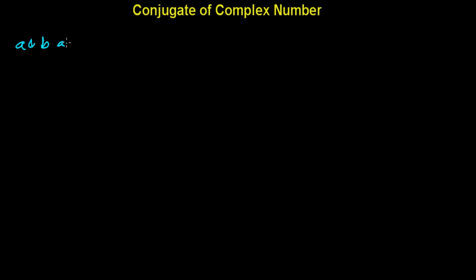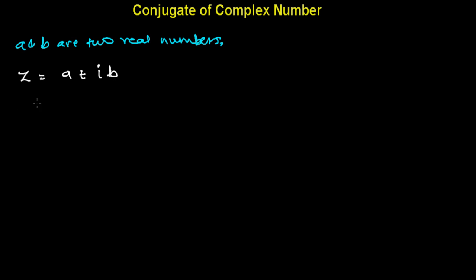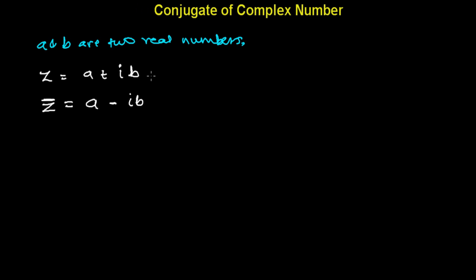Let's say a and b are two real numbers and z is a complex number, let's say a plus ib. Then z-bar, read as 'z bar', is called the conjugate of the complex number if the real part is the same and the imaginary part is also the same but just differs in sign — that time z-bar is called the conjugate of the complex number z.